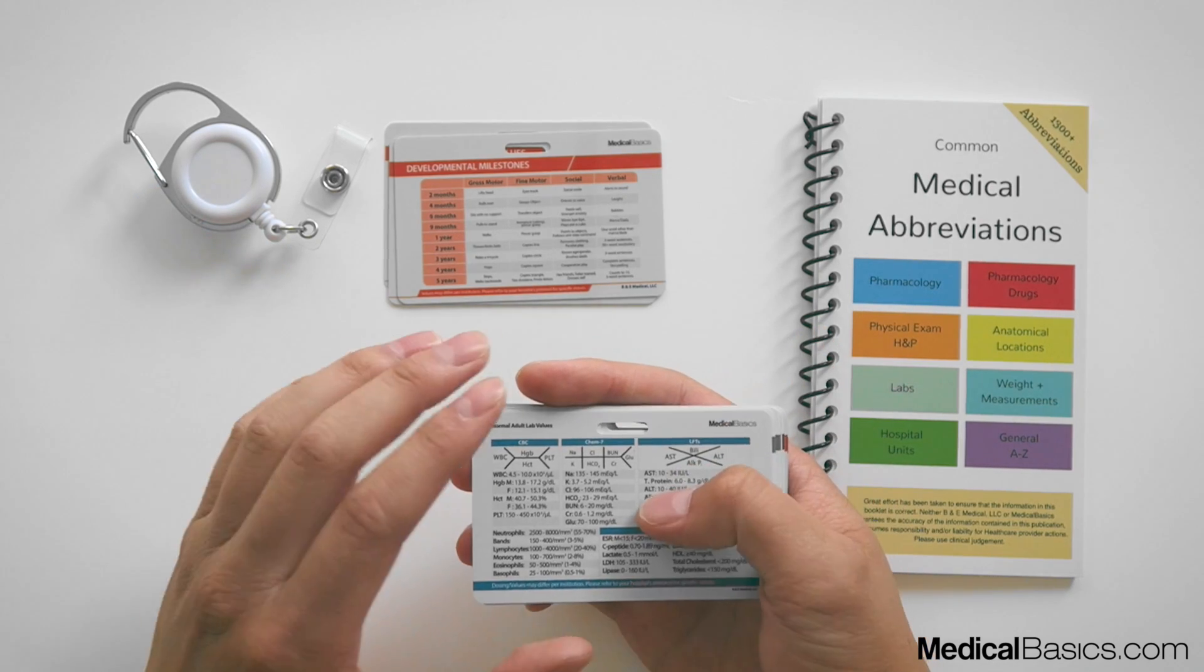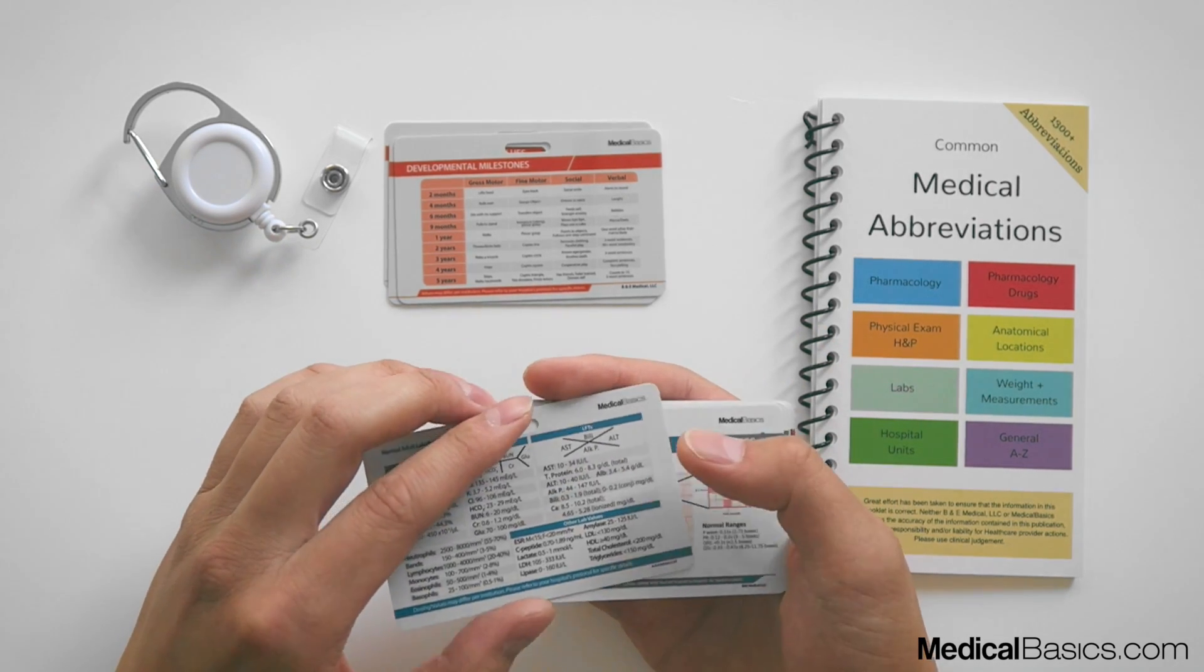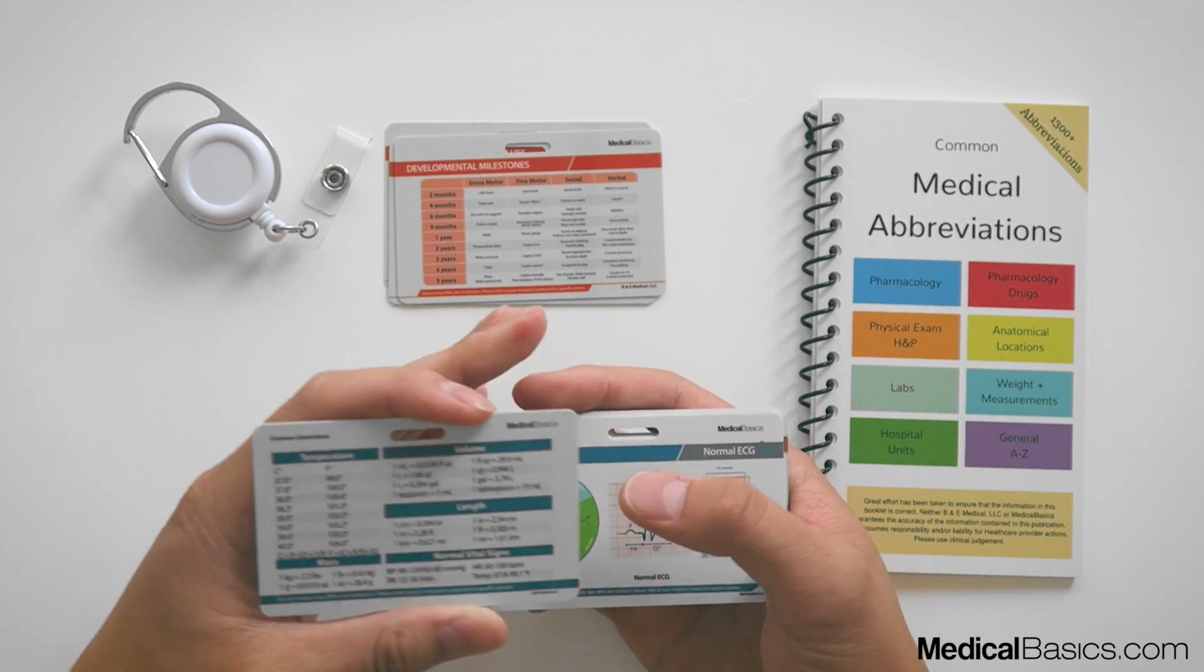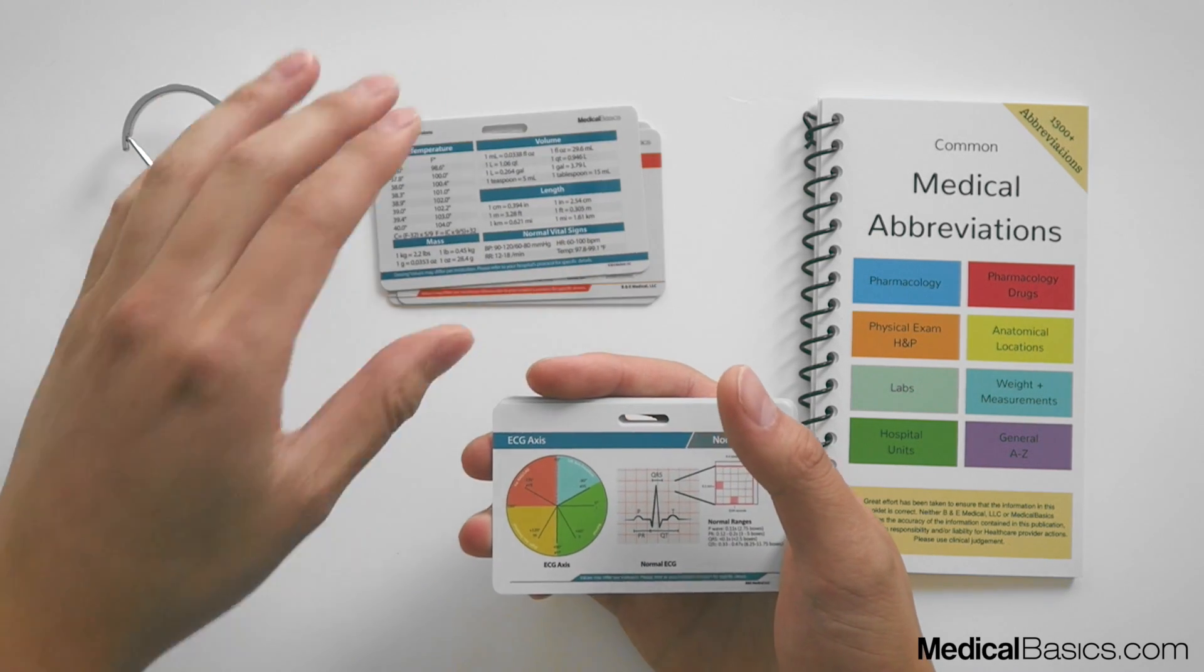What are all the normal lab values? At least what are the typical ranges? And they obviously differ based on the institution as well as some different types of conversions.